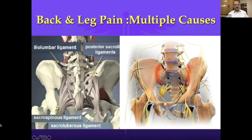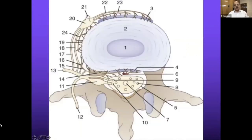There can be myofascial issues, ligament problems, facet, SI joint, hip syndrome, ischial tuberosity syndrome or hamstring syndrome, and further on knee and ankle. All of these have been covered. Now, understanding the pain at the level of the disc is important.